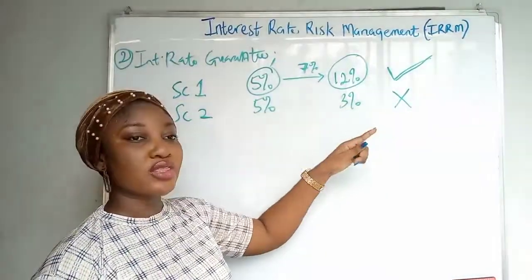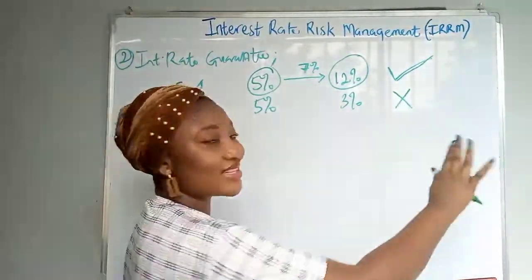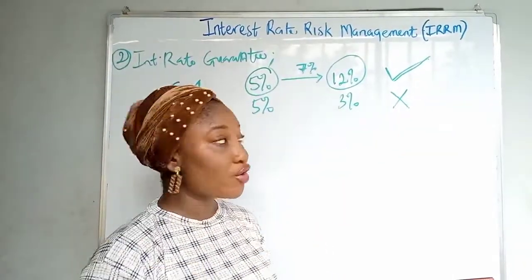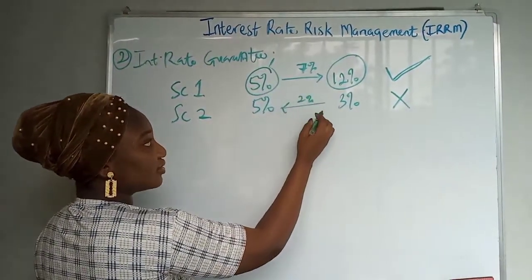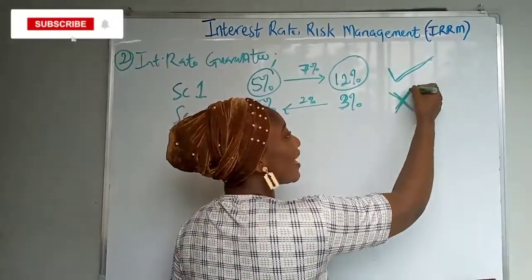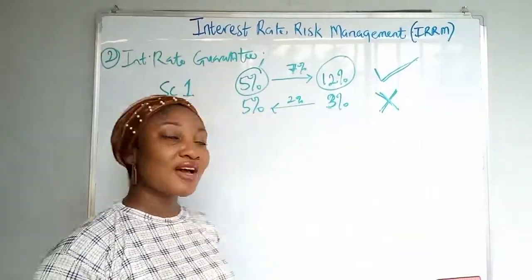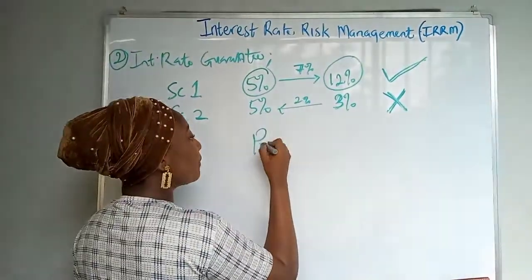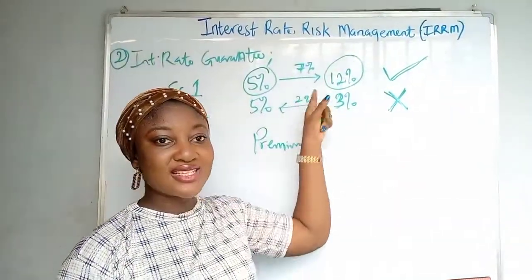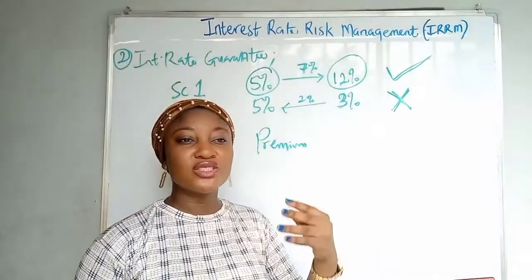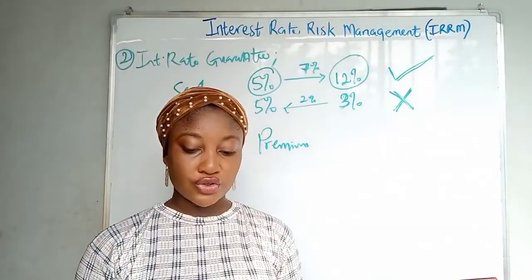The customer will exercise the option because interest rates have risen — that's the flexibility of the interest rate guarantee, unlike the FRA. With a forward rate agreement, whether rates are falling or rising, you must exercise it because it's an agreement. Here, if the rate falls to three percent, the customer can choose not to exercise the option. The payment for that flexibility is the premium — you're paying for the bank's service of covering that seven percent difference.